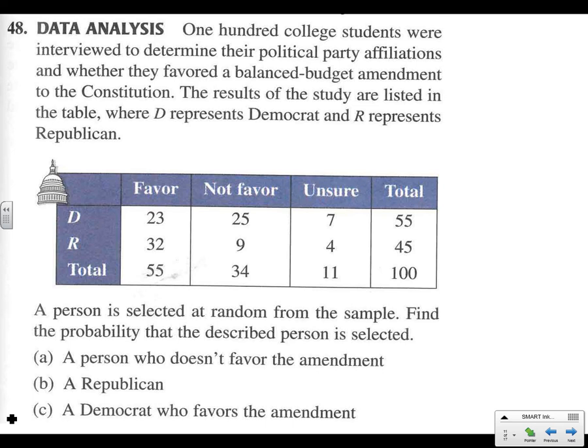Let's look at 48. 100 college students were interviewed to find out their political affiliations and whether they favored a balanced budget amendment. A person is selected at random from the sample. Find the probability that the described person is selected: a person who doesn't favor the amendment. So on this one, there were 34 people who did not favor the amendment. So 34 out of the 100 people selected, which is reducible. We can drop that down to 17 over 50. We can also write this as a decimal, 0.34, which is 34%.